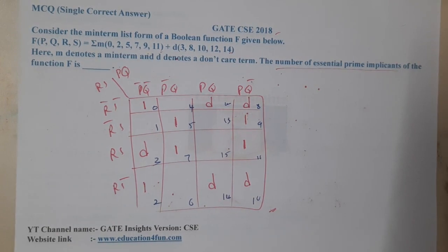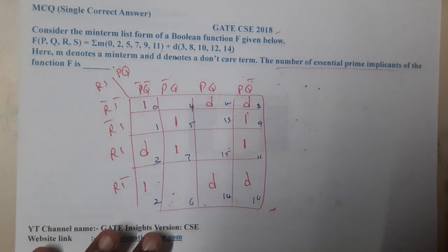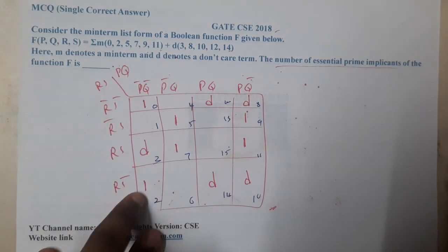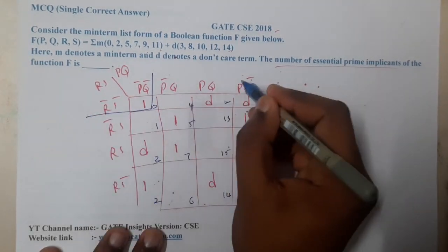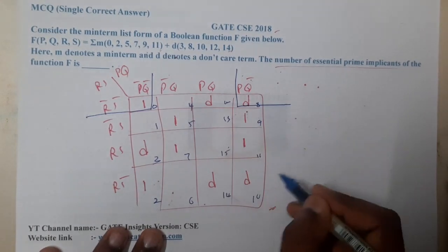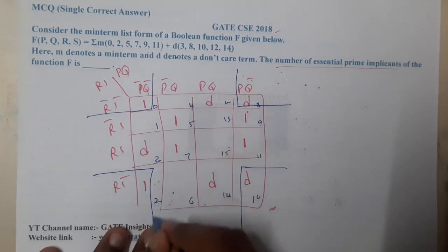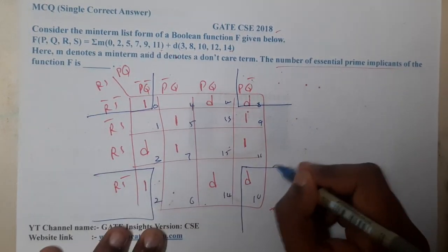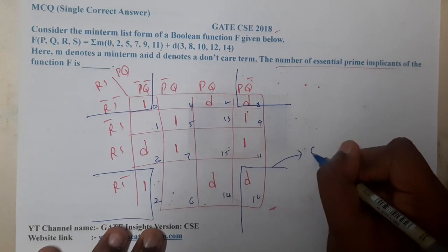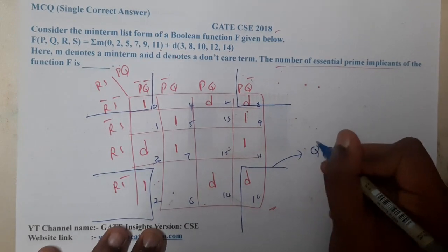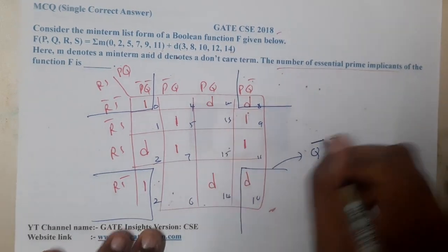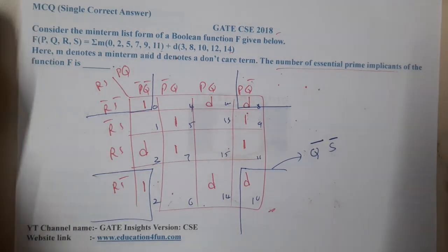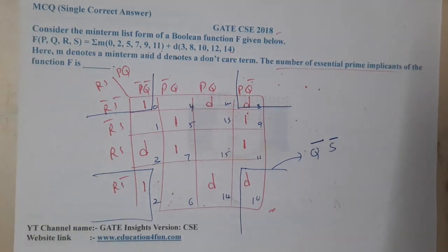If you observe carefully, to cover the two ones at the corners, the best method is to take the four-corner group. That four-corner group gives us Q̄S̄ — that is Q-bar S-bar.